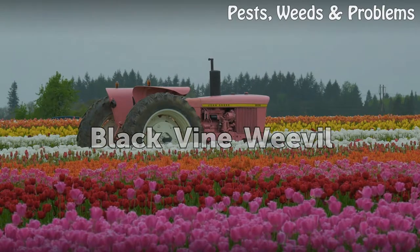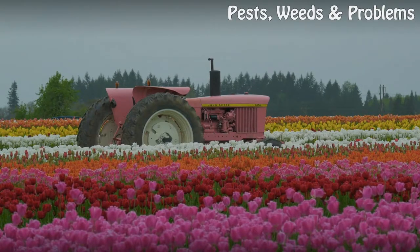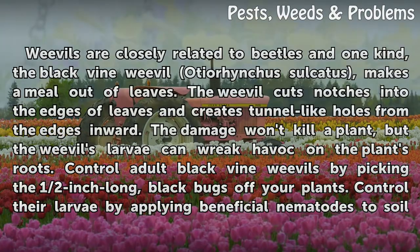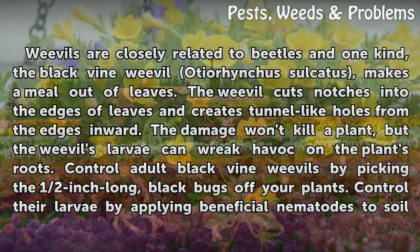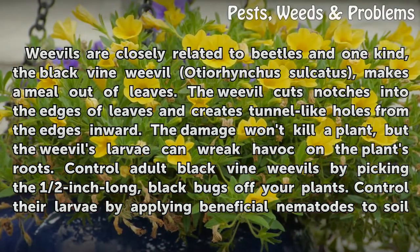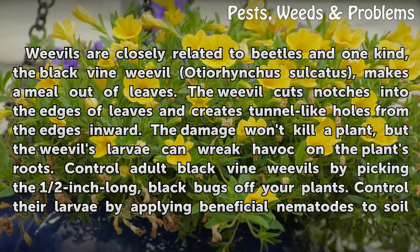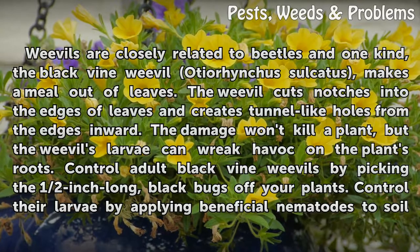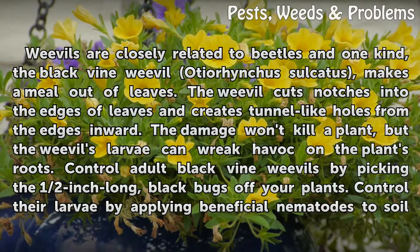Black Vine Weevil: Weevils are closely related to beetles. The Black Vine Weevil (Otiorhynchus sulcatus) makes a meal out of leaves, cutting notches into the edges and creating tunnel-like holes from the edges inward. The damage won't kill a plant, but the weevil's larvae can wreak havoc on the plant's roots.